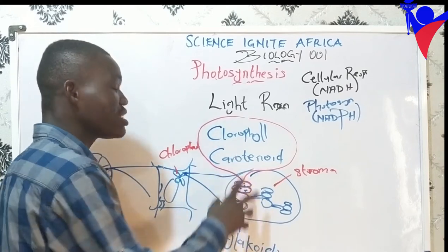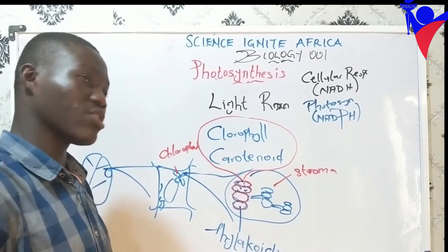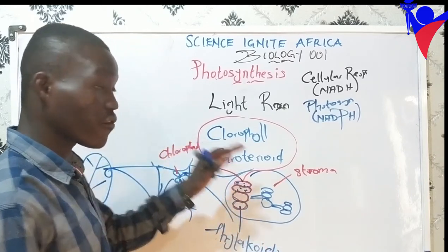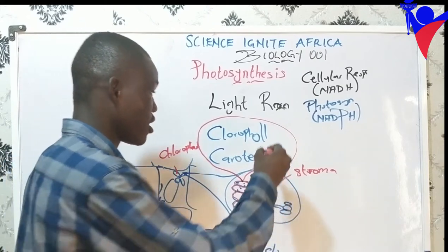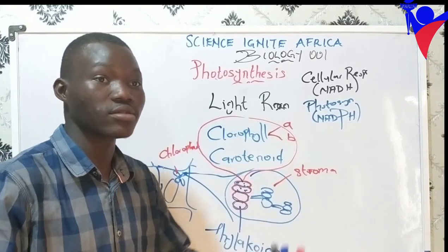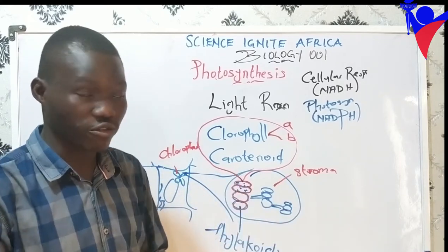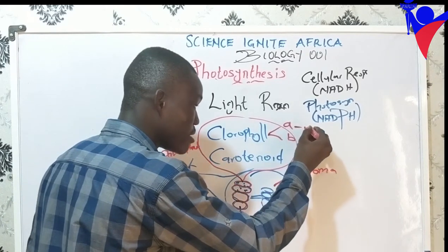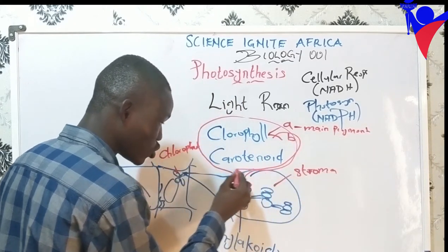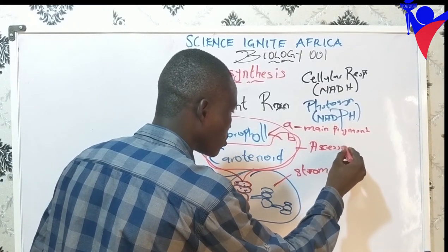The other pigments are called carotenoids. Chlorophyll is the major pigment that absorbs light. We have different chlorophylls — we have chlorophyll A and chlorophyll B. Chlorophyll A is the main pigment of the chloroplast. Chlorophyll B and the carotenoids are called accessory pigments.